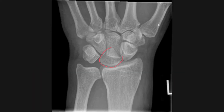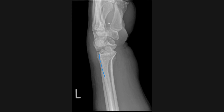Let's take a look at this example. On this PA view of the wrist we can see that the lunate has an abnormal triangular configuration. When we look at the lateral view we can see the distal radius lines up with the lunate, however the capitate is out of line, and this is in keeping with a perilunate dislocation.